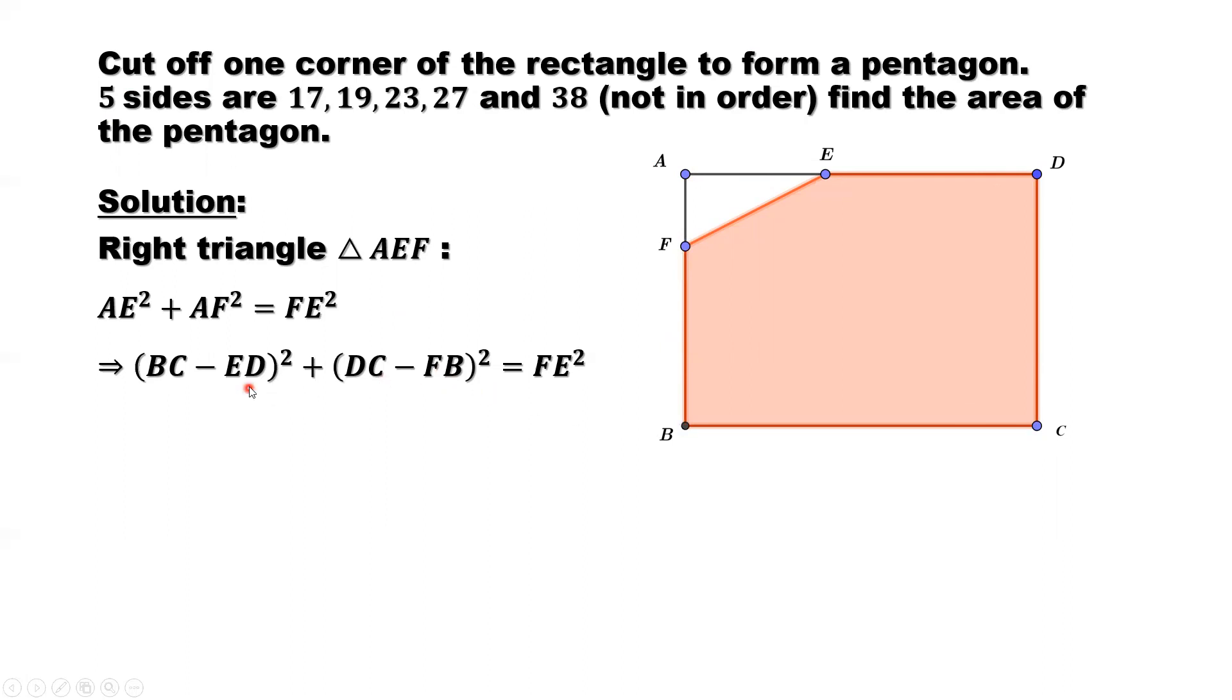FB, ED, BC, DC, all are given, but we don't know which one is which. FE is also given. The difficult part is because we don't know the order.